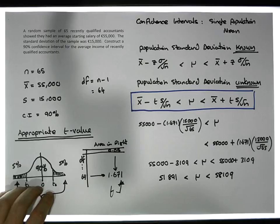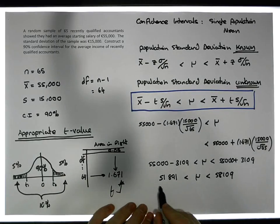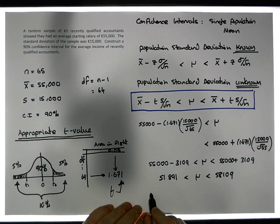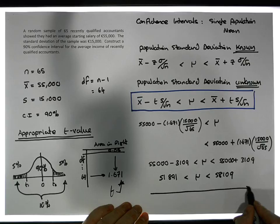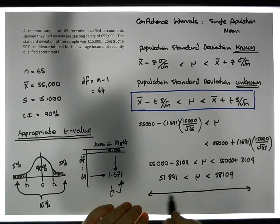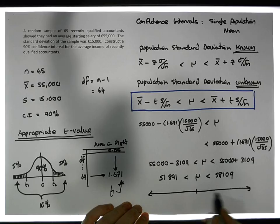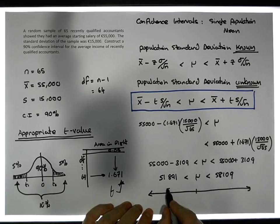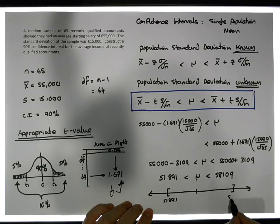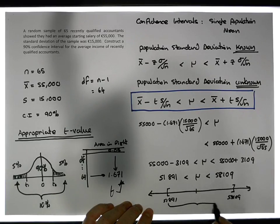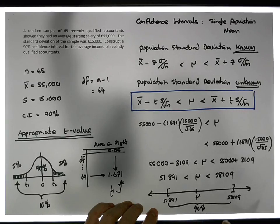What we're saying is that we're 90% confident the true population average is somewhere along this particular continuum, and that between 51,891 and 58,109, we're 90% confident that the true population mu is in there. But keep in mind we could be wrong.